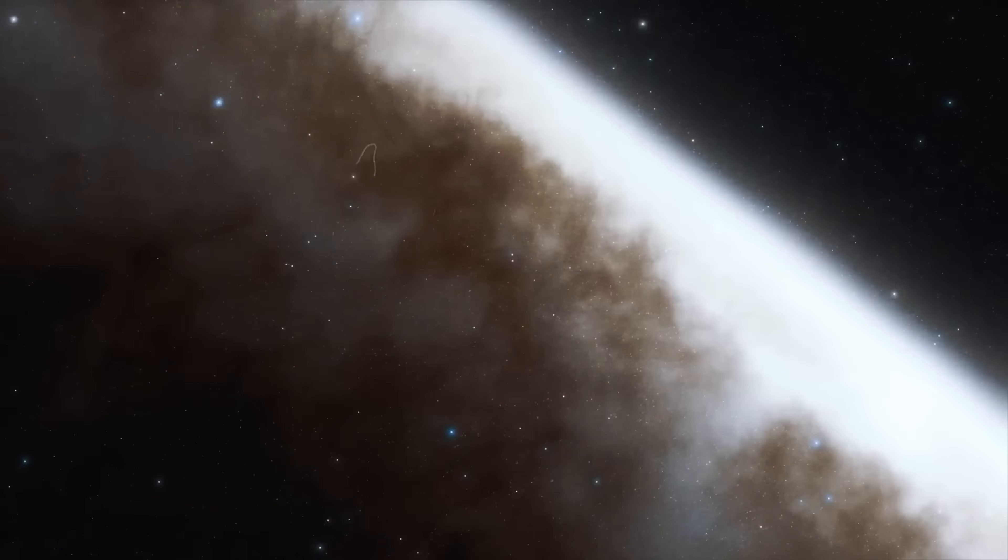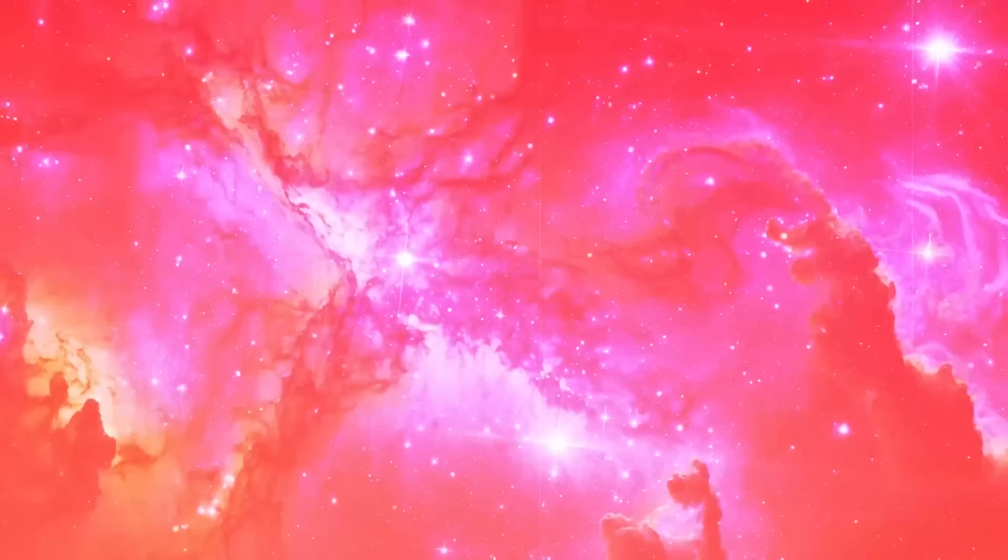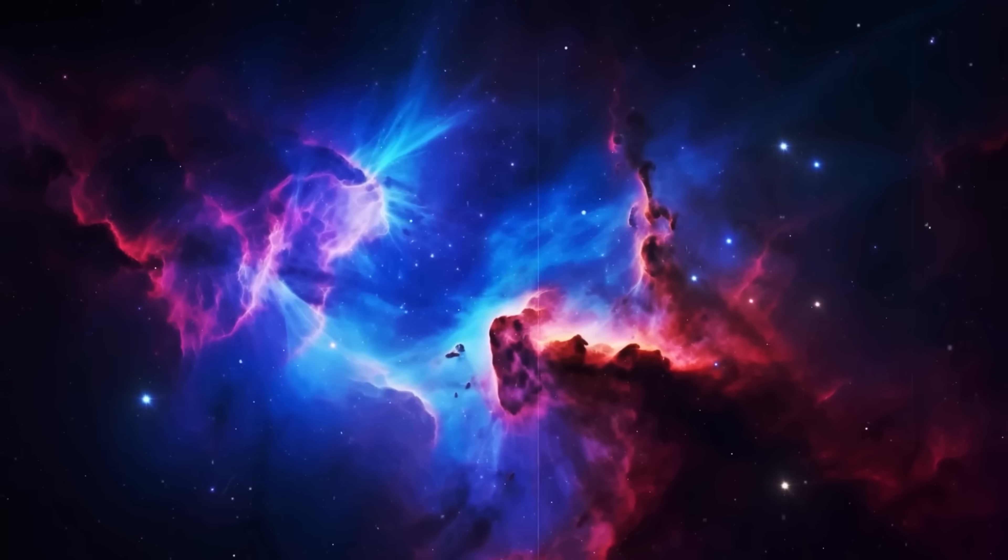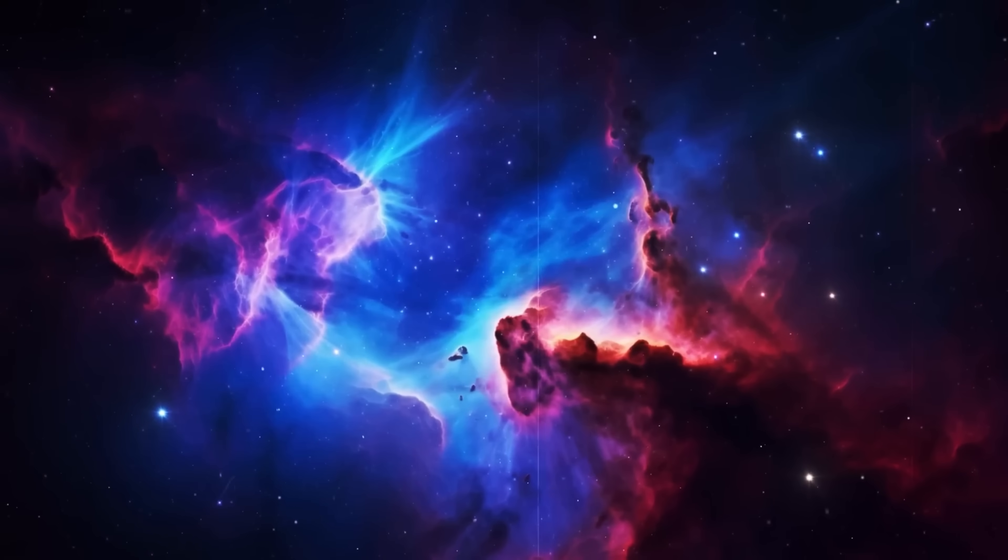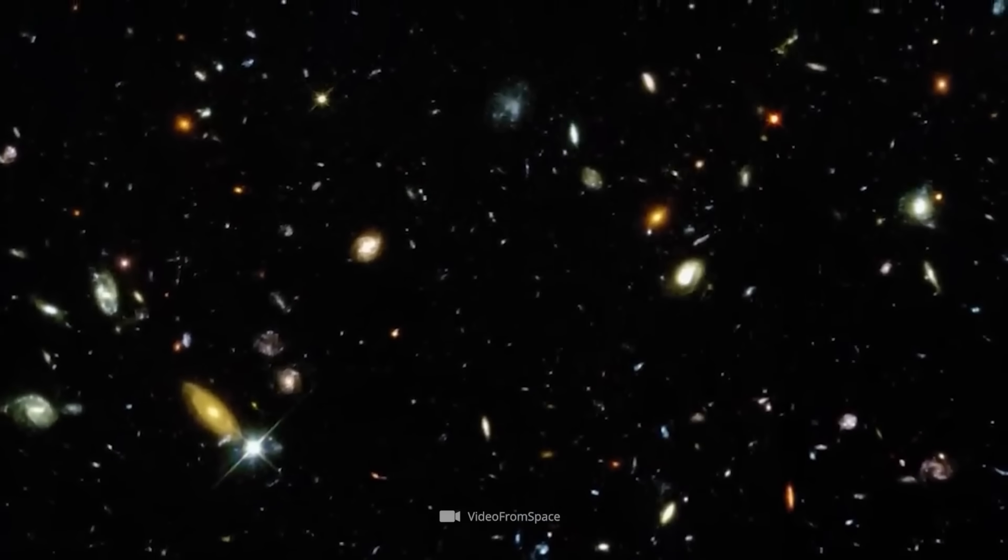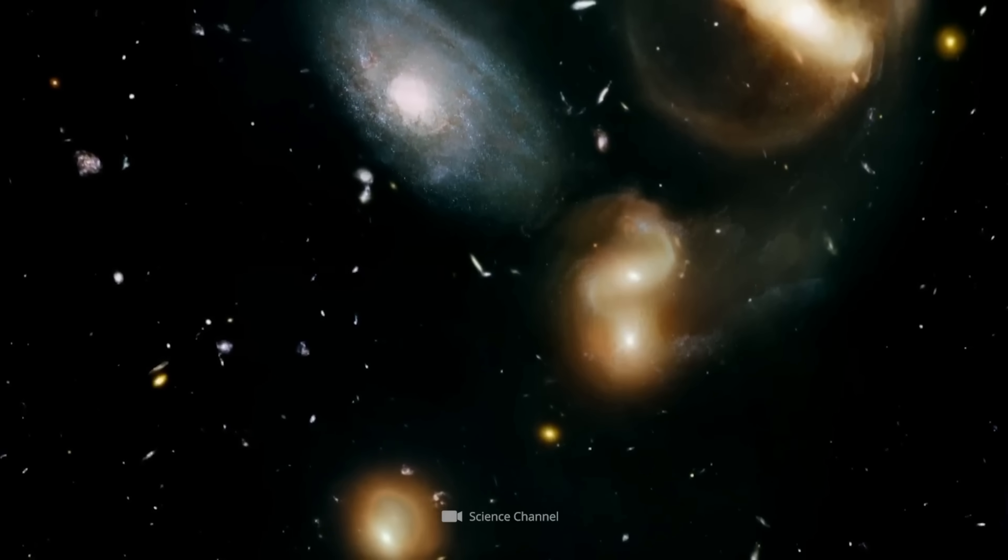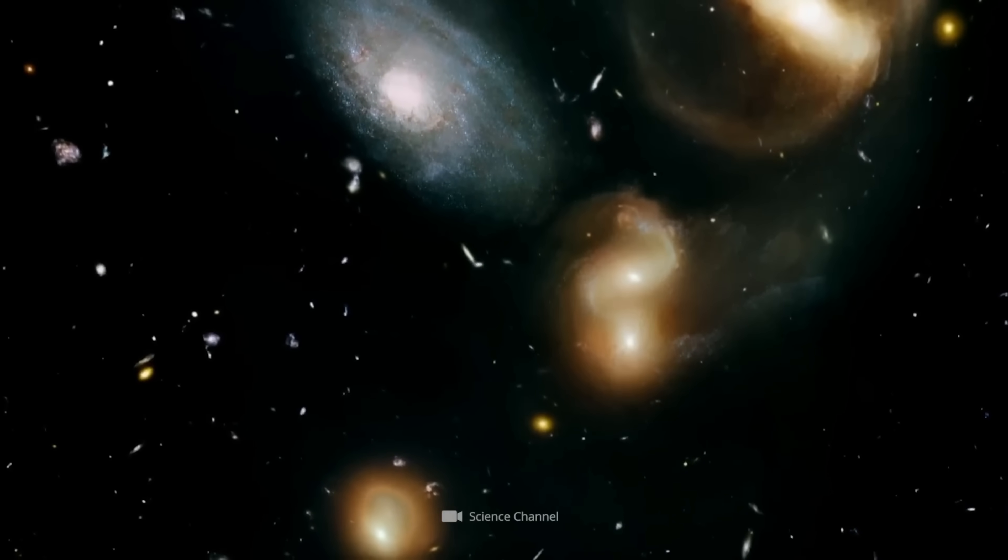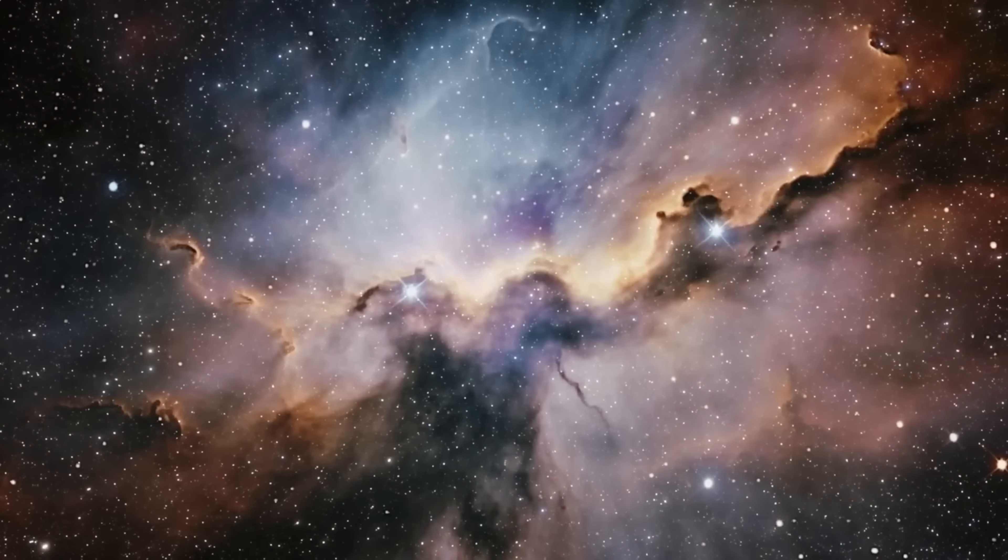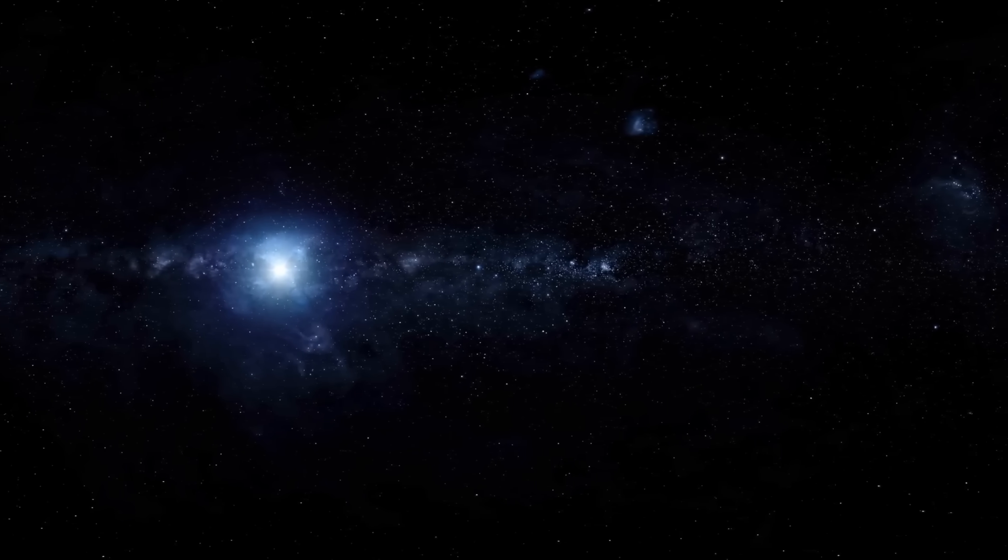Matter around the void is denser and gravity pulls galaxies outward, toward the edges. From our vantage point inside the bubble, galaxies appear to be accelerating away from us faster than they should. But this might not be due to dark energy or flawed measurements. It could just be the illusion caused by our position inside an under-dense region. This would explain the Hubble tension elegantly.